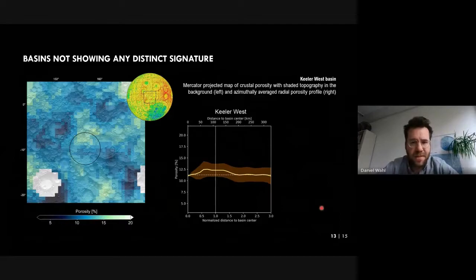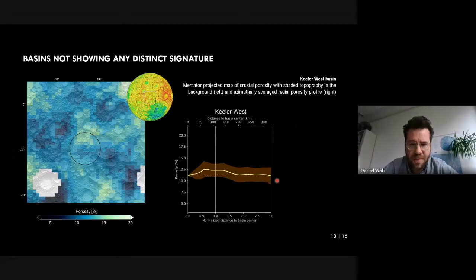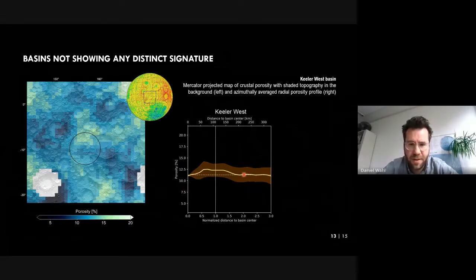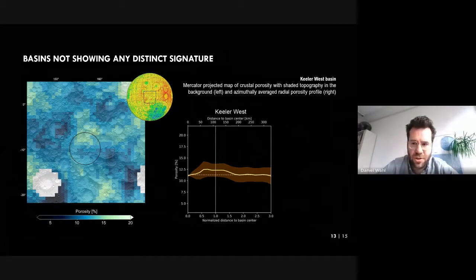Apart from basins with pronounced or less pronounced porosity patterns, we also found basins showing no distinct signature at all. Here I'm showing Kehler-West Basin, whose porosity is about the same over its entire extent and beyond, with a value of about 12%, similar to the background porosity. So there appear to be further effects influencing the porosity signature of lunar basins.